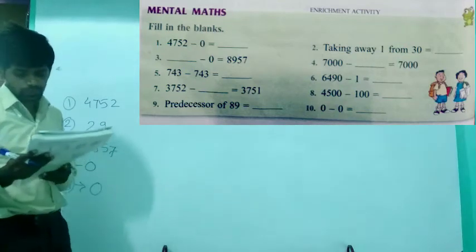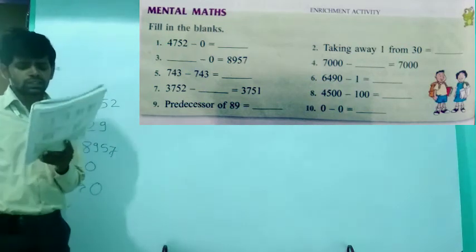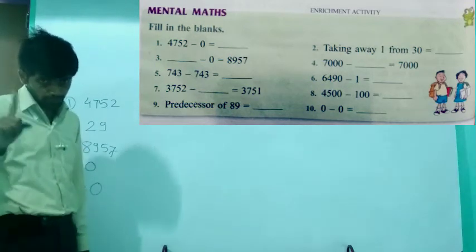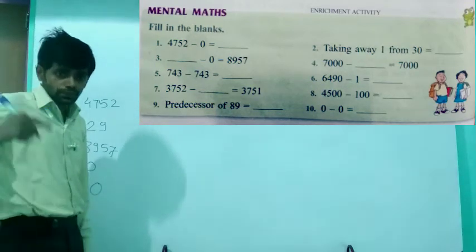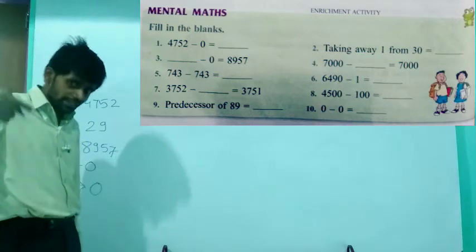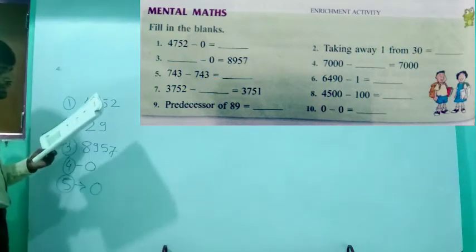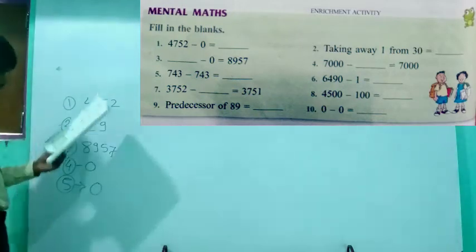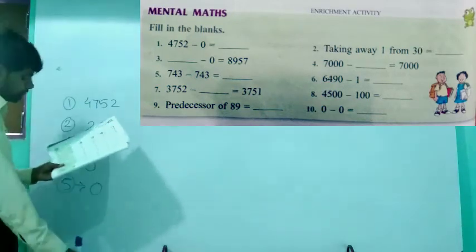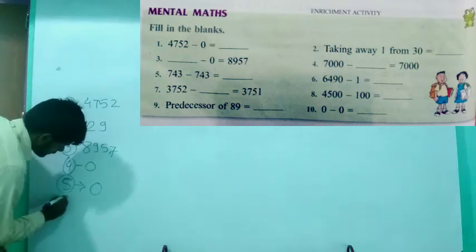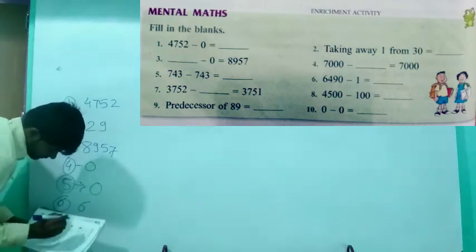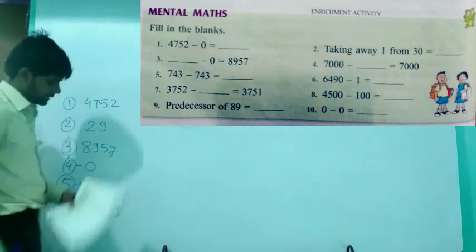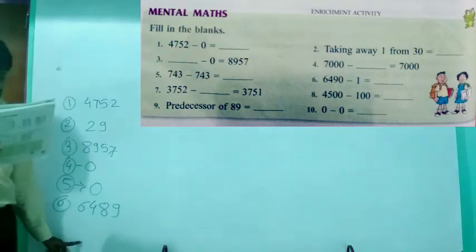Let's solve the sixth one: 6490 minus 1. If you subtract 1 from any number, the difference is the predecessor of that number. So the sixth answer is the predecessor of 6490, which is 6489.